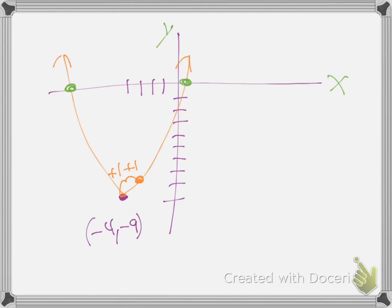We can't rely on my graph - we need to do something to figure those out. What could we do to find x-intercepts? What do you know about those two dots? Do I know how far over they are? No. But do I know how far up they are? Well, they're up zero - they're on the line. That's what it means to be an x-intercept - you're on the x-axis, you're at height zero. Their y-coordinate is zero.